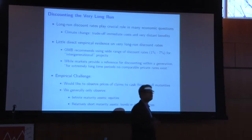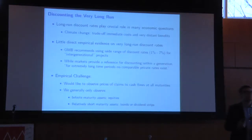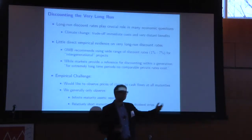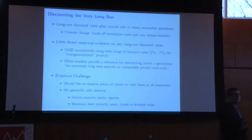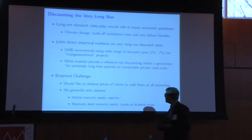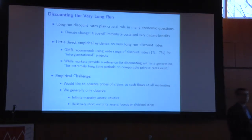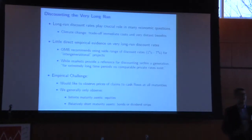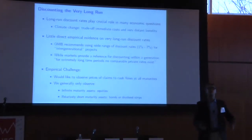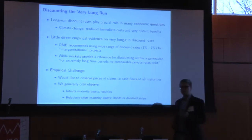What we're trying to do with this paper is move towards closing this gap and provide an estimate from market rates of what discount rates households apply to extremely long cash flows. The empirical challenge is that ideally you'd want to observe prices of cash flows at all maturities. But in practice, we only observe either prices of infinite-maturity assets such as equities, or relatively short-maturity assets like bonds — which hardly ever go beyond 30 or 40 years — or dividend strips, which we observe for even fewer years.